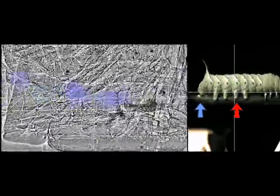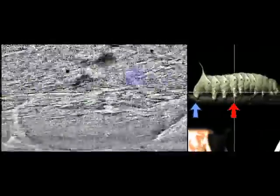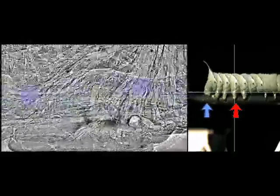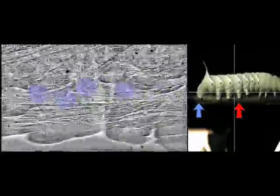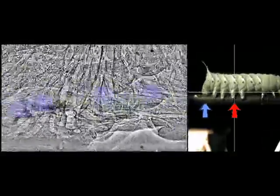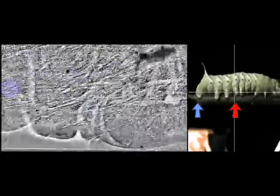Since these gut-associated trachea provide a marker for gut position, we know that the gut moves during crawling prior to the arrival of the crawl wave, advancing as much as a full segment ahead, before the body wall can catch up.